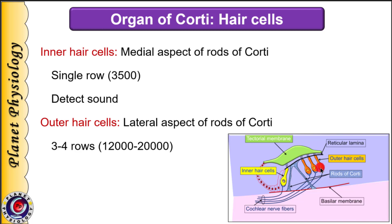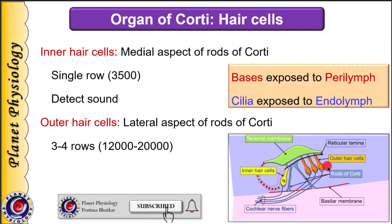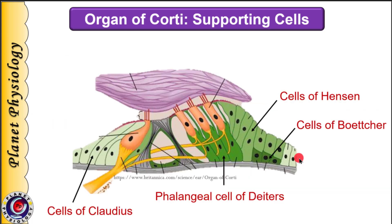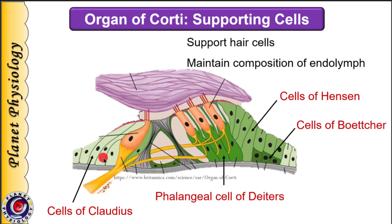Outer hair cells are supported by Deiters cells from below. Since it is the reticular lamina and not the basilar membrane that acts as a barrier between endolymph and perilymph, the bases of hair cells are exposed to perilymph whereas the cilia are bathed in endolymph. Due to this, hair cells are highly sensitive and detect even the slightest sound. Various supporting cells in the organ of Corti include Deiters cells supporting outer hair cells, and other supporting cells such as cells of Hensen, Boettcher, and Claudius, which help maintain the composition of endolymph apart from supporting the hair cells.